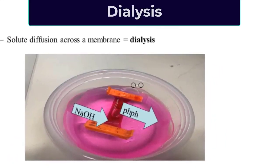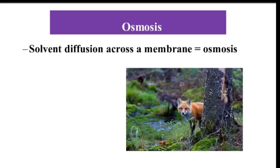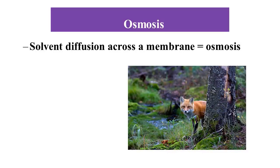We have learned about diffusion in the previous video. The solute diffusion across the membrane is called dialysis. On the other hand, osmosis is the solvent diffusion across the membrane. In most living organisms, water is the solvent. So we can say osmosis in living organisms is the movement of the water molecule across the selectively permeable membrane.